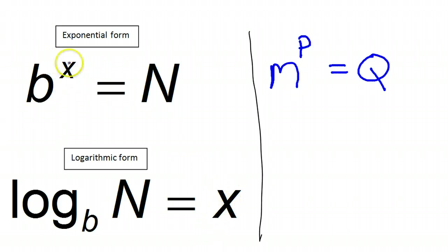Notice, in exponential form, x is the exponent. And sure enough, logs equal exponents. So if I want to write log form, the first thing I'm going to do is write log equals p, because p is the exponent and I know logs equal exponents. Also, this would be read log base b of n equals x.